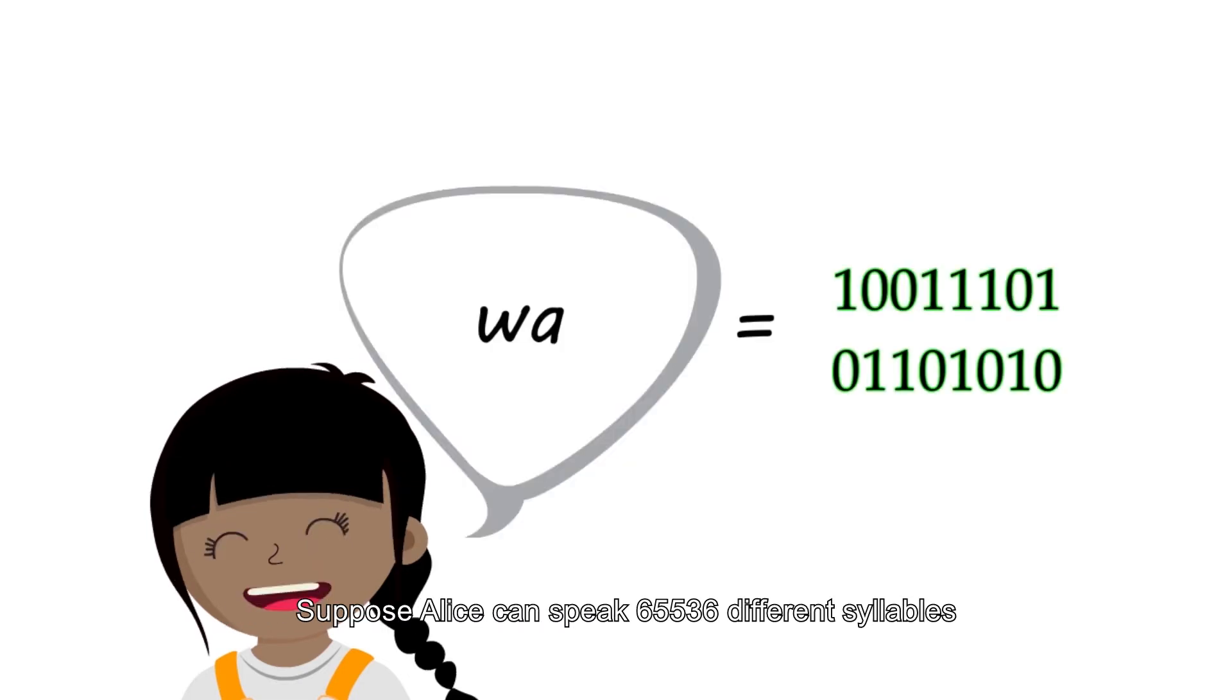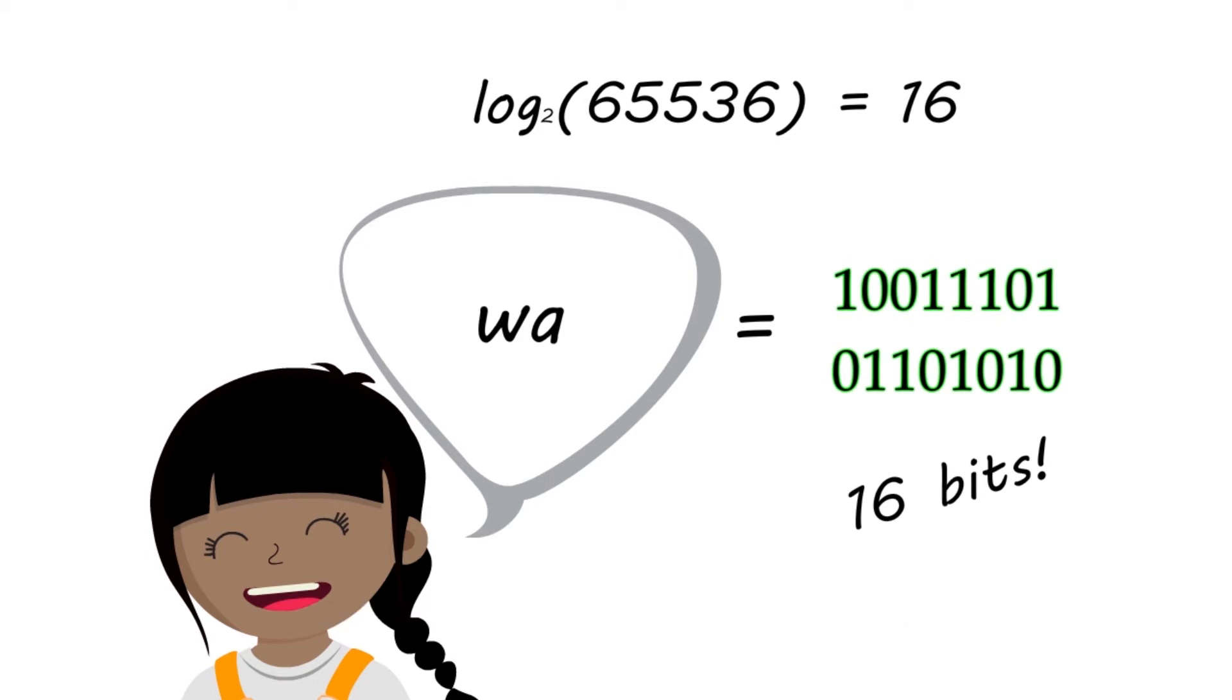Suppose Alice can speak 65,536 different syllables. If we use bits to represent each syllable, we will have 16 bits per syllable. In a quiet place, Bob can understand everything Alice says, being able to get all the 16 bits in each syllable. The channel from Alice to Bob is noiseless.